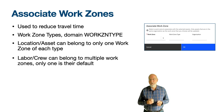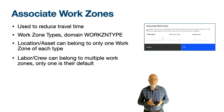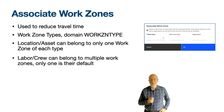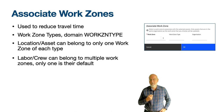Labor and crew can be associated with multiple work zones, but only one work zone can be designated as their default. Facility management companies may group shops and offices for their customers into work zones to reduce the number of times an engineer who lives in the work zone is called out to work in an adjacent work zone, or assigned to work orders in work zones they are not associated with.